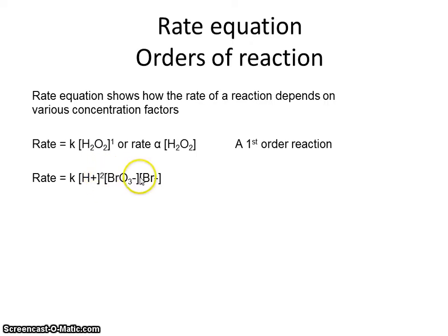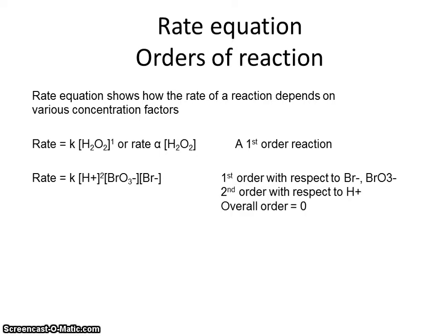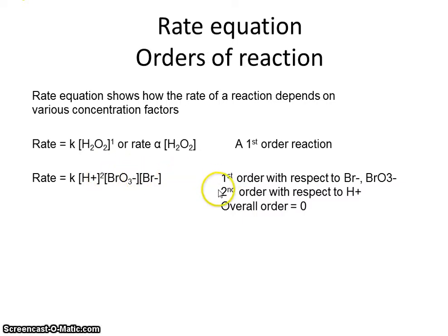Here's a rate equation for a reaction involving bromate ions, bromide ions, and H⁺ ions from an acid. All three concentration terms are included, but there is a squared term for H⁺. You should note the implied ones on the other concentration terms. Pause the video and state the order with respect to each reagent and the overall order. The answer is first order with respect to bromide and bromate, second order with respect to H⁺, and the overall order is four — the sum of all individual orders: 2 + 1 + 1.